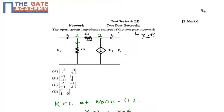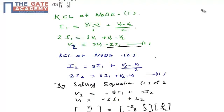I am going to apply the nodal at node 2. In node 2, the incoming current is I2 and the outgoing currents are V2 minus V1 upon 2 and 3I1. I have applied the nodal at node 2 which will be I2 equals 3I1 plus V2 minus V1 by 2.